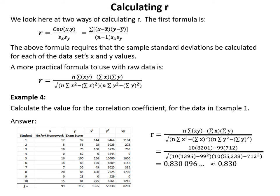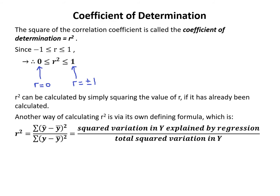In example 4 we calculate the correlation coefficient for the data in example 1. The column for y-squared is needed here for the shortcut formula. Substituting the raw data values: r equals 10 times 8201 minus 99 times 712, all over the square root of (10 times 1395 minus 99 squared) times (10 times 55338 minus 712 squared), giving r equals 0.830 to three significant digits.